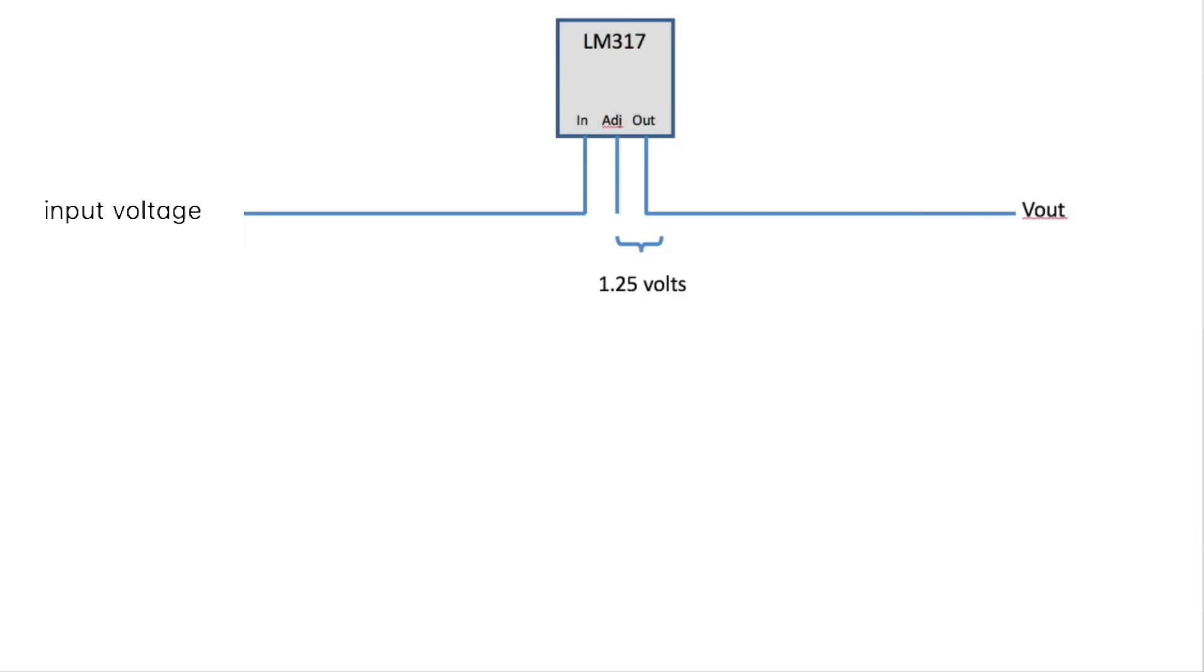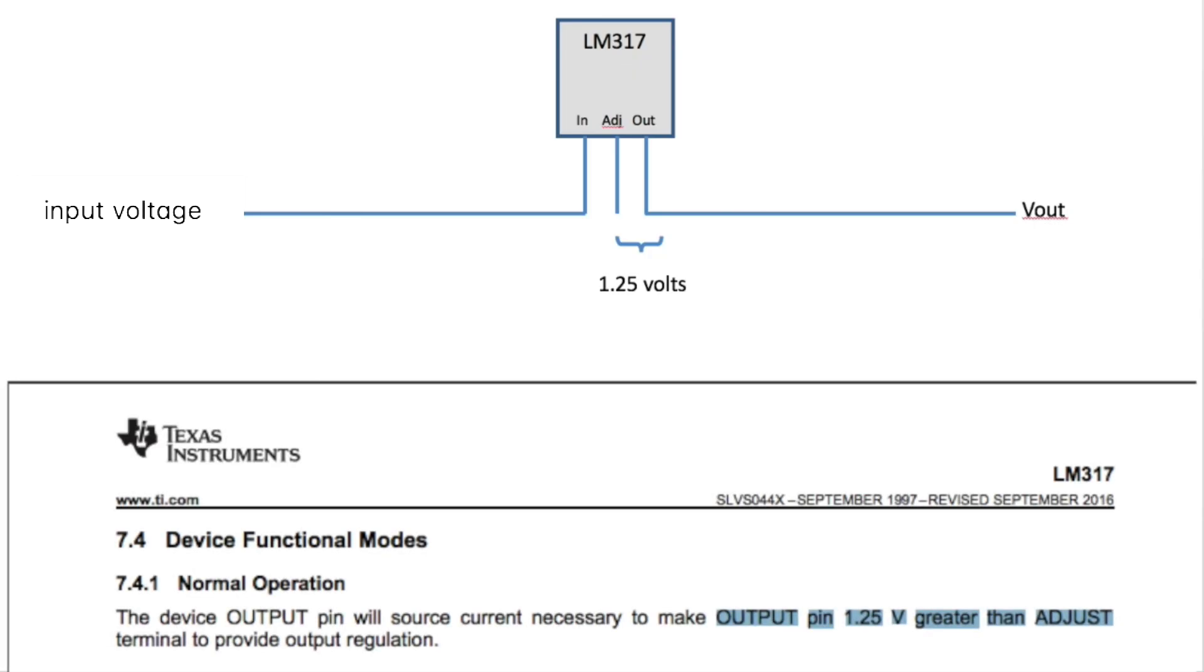So let's get into how we work with the LM317. It has three pins, the input, adjust, and output pin. The crux of this device is that there's a constant voltage of 1.25 volts going across from the adjust pin to the output pin. We can take advantage of this to create our circuit.